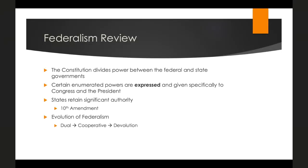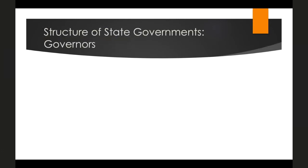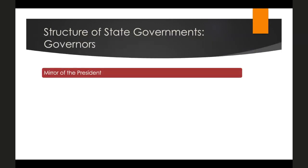Let's look in more detail at how state governments are actually structured. The first thing that comes to mind is the role of the governor, because the governor is like a mirror of the president — the governor's office is like the executive branch. They are the most visible state politician, just like the president is the most visible politician in the country. Many state constitutions actually empower the governor vis-à-vis the state legislature more than the U.S. Constitution empowers the president over Congress.